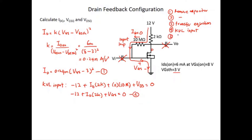Step five is to solve equations from steps 3 and 4. In step 3 you have equation 1, and in step 4 you have equation 2. For solving, you have two approaches: you can use a mathematical approach with a calculator, or you can use a graphical approach. It depends on whether the question specifies a particular method, so you need to comply with that requirement.